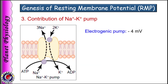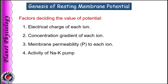Yes, it is due to the activity of the sodium-potassium pump. It pumps 3 sodium out and 2 potassium into the cell, causing a net deficit of 1 positive charge within the cell, creating negativity inside — hence it is known as an electrogenic pump. It contributes –4 mV of negativity to the cell. Thus, the value of resting membrane potential is decided by the electrical charge of each ion, their concentration gradient, membrane permeability for each ion, and the activity of the sodium-potassium pump.